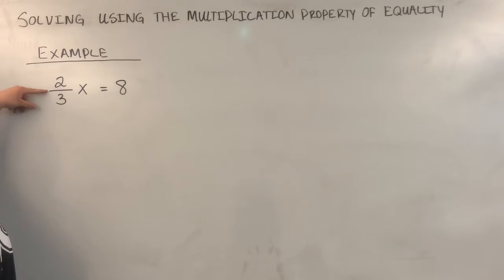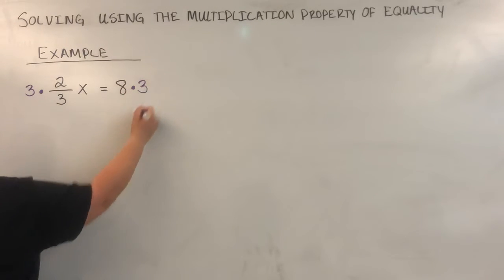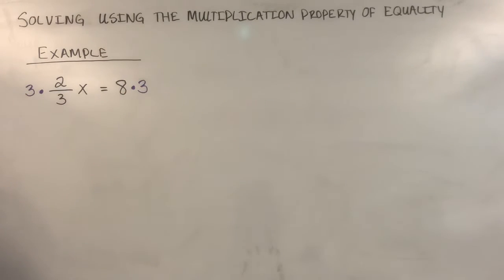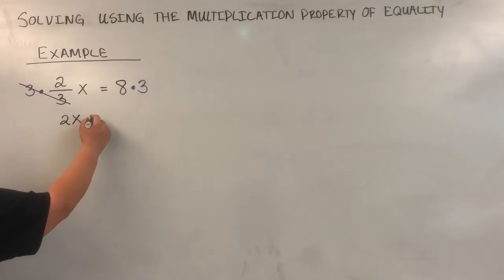The fraction line means division, right? So if I wanted to get rid of division, I would multiply. I would multiply both sides of this equation by 3 to get rid of that denominator. So for now, what we have, these 3s on this side are going to cancel out. And what it leaves me with is this 2 and this x. Remember, multiplication is happening between the fraction and the x. So it's 2 times x on this side. On this side, I have 8 times 3, which is 24.